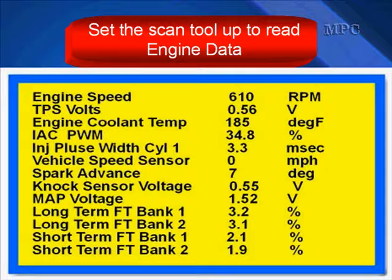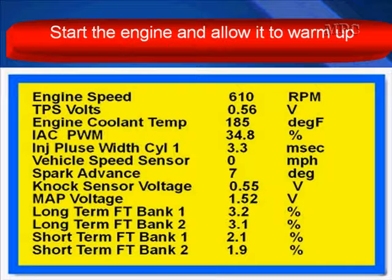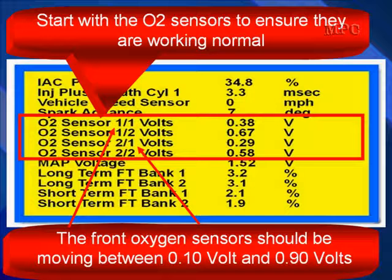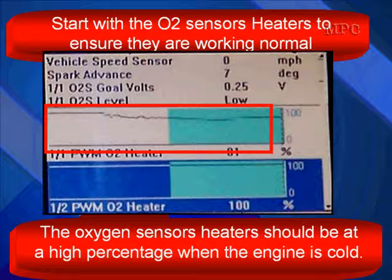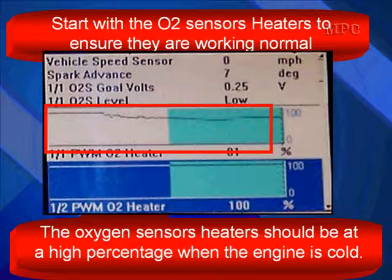Set up the scan tool to read engine data after you have determined which cylinders are misfiring. Start the engine and allow it to warm up. You can begin with the oxygen sensors and ensure that they are working normally. Go ahead and start with the oxygen sensor heaters. Here we've graphed the pre and post heaters. The top one in the red box is showing us we have about an 81% duty cycle pulse width modulated heater.